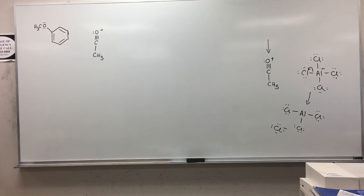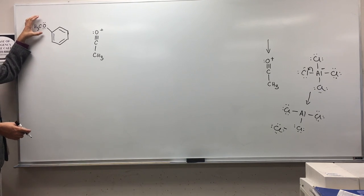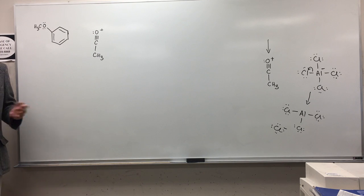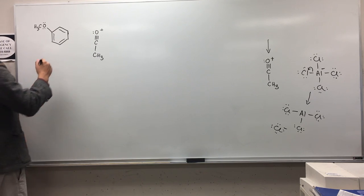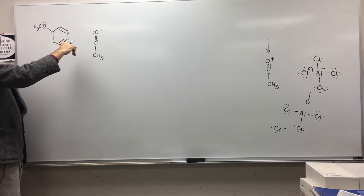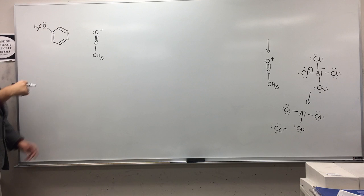But since we've got a substituent here, right, and it's asking for the major product, we would expect the para to be major because it's further away from the other substituent, right? Steric hindrance is going to make the para be more favorable. Is that okay? So what happens here, right? This carbon, remember, is very electrophilic, okay? So that's why we can use the benzene ring here as a nucleophile, okay?